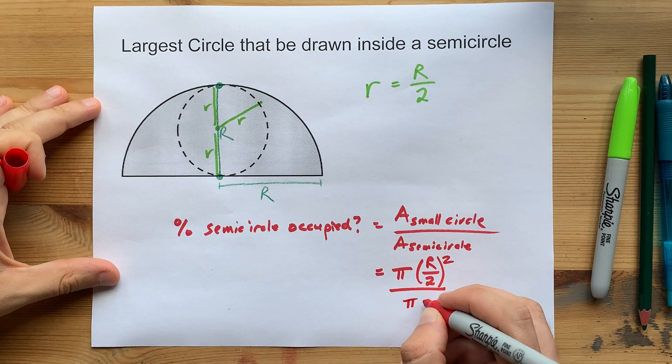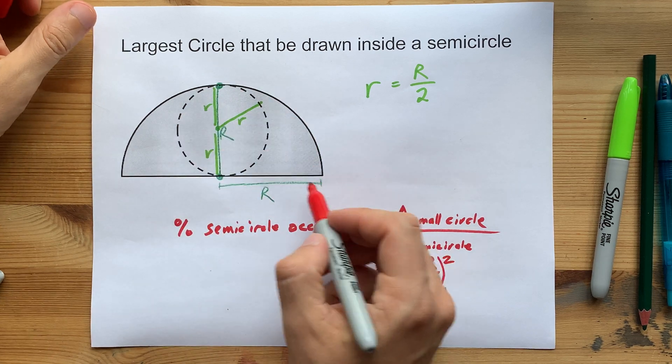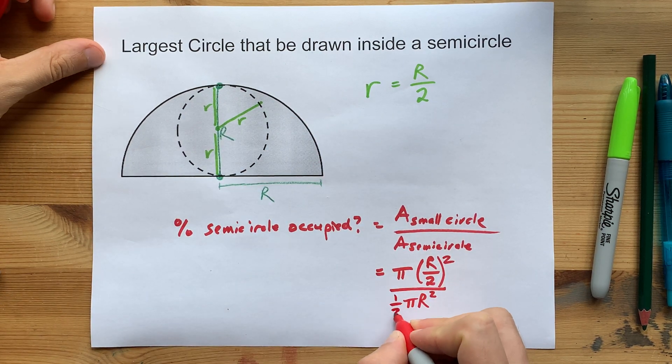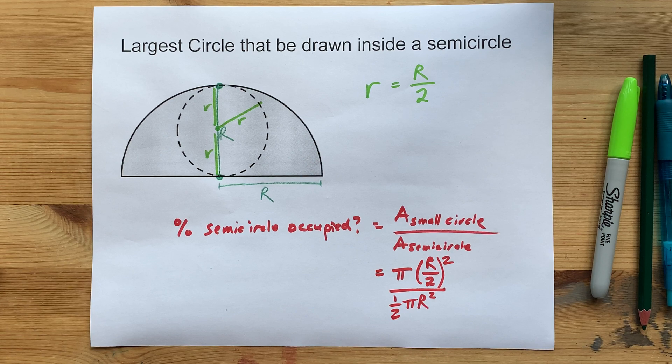The semicircle area is πR² as well, but you're using big R as your radius. And because it's a semicircle, you're only using half of that. So algebraically, you end up with something like this.